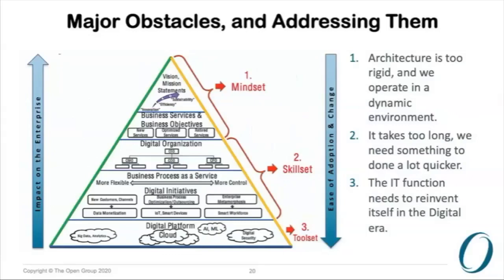Not going into the architecture details, but as part of this journey there are major obstacles. The first obstacle is that architecture tends to be too rigid, while government operates in a very dynamic environment. How do you plan for changes? It is all well to do a blueprint that took two years, but then the government has changed, or a process has changed, and things need to be brought into the architecture blueprint to reflect the current reality. The second obstacle: it takes too long. We cannot go to a state or federal government and say I will take five years to complete the blueprint — by that time there may be a new election.